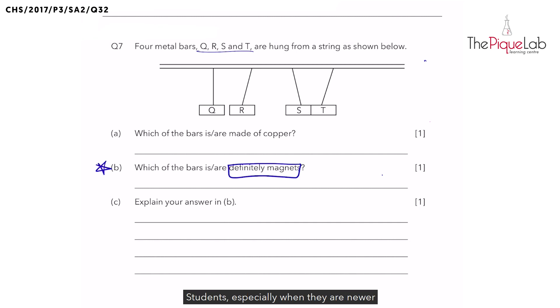So the question is asking which of the bars is or are definitely magnets? Students, especially when they are newer to the topic of magnets, think that you can identify a magnet when they see attraction. So they tend to answer S and T for this question, as S and T moved towards each other, showing that they have attracted. However, we cannot say that S and T are definitely magnets because they have attracted.